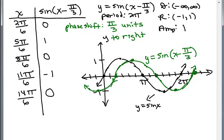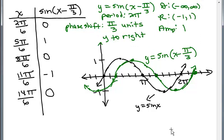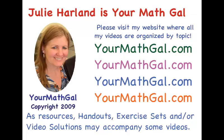So there we are. The graph of y equals sine of x minus π/3. We have y equals sine of x minus π/3, the domain, the range, the amplitude, the period, the phase shift. And we're concentrating on the green here. But do note that it is, this is why it's called a phase shift, it's π/3 units to the right of where y equals sine of x is. This is YourMathGal, Julie Harland. Please visit my website at yourmathgal.com where all of my videos are organized by topic.